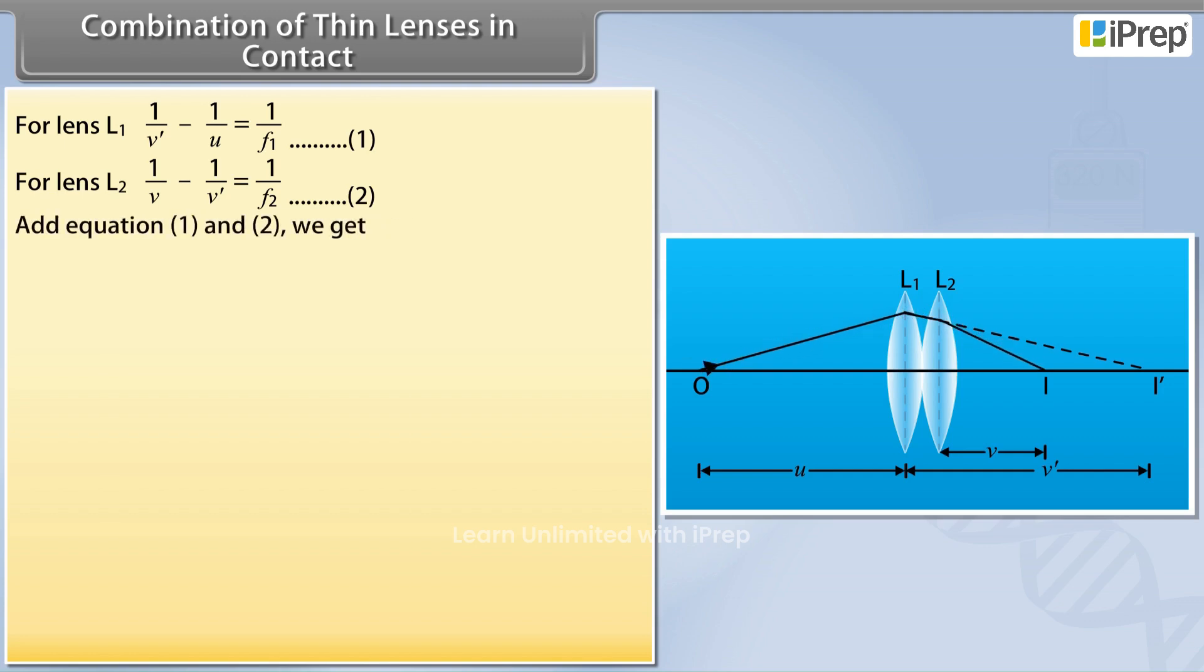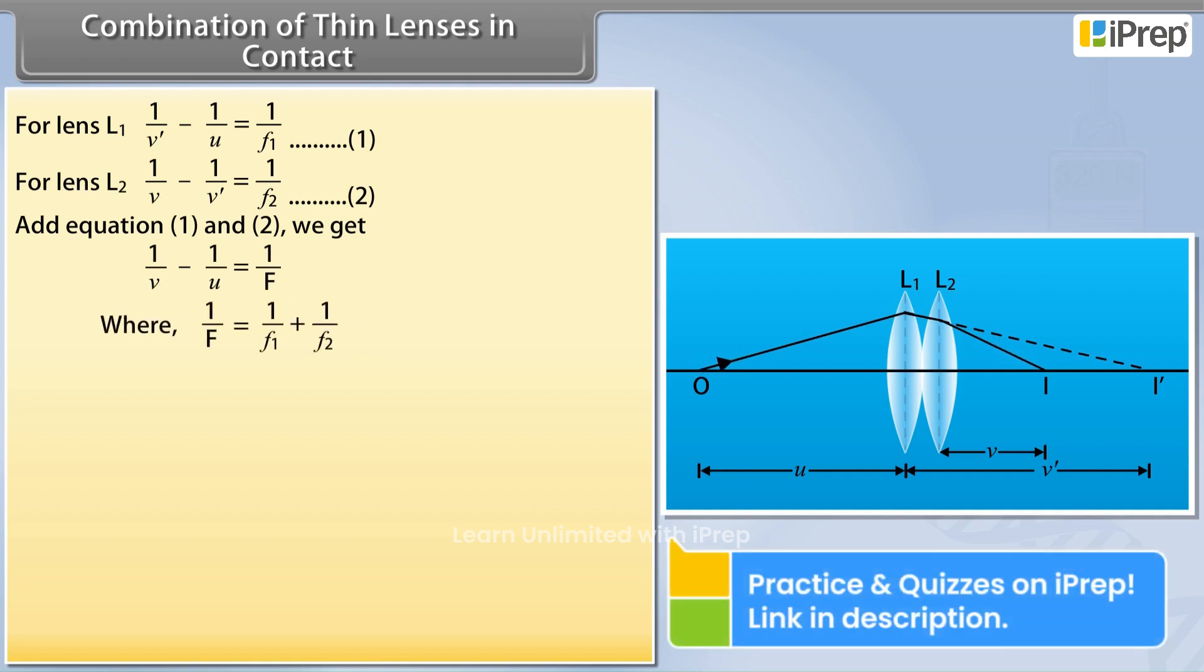Add equation 1 and 2, and we get 1 by V minus 1 by U is equal to 1 by F, where 1 by F is equal to 1 by F1 plus 1 by F2.